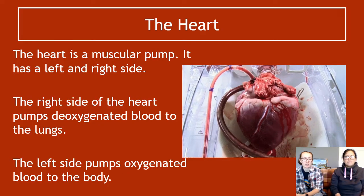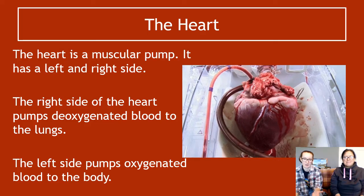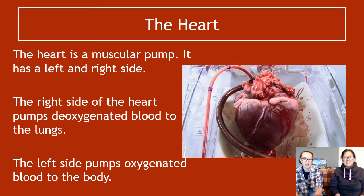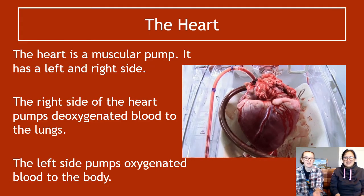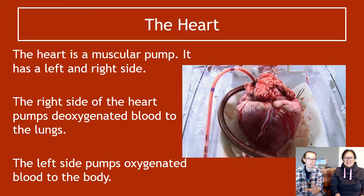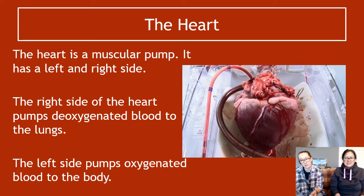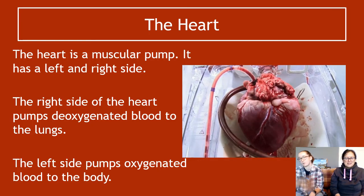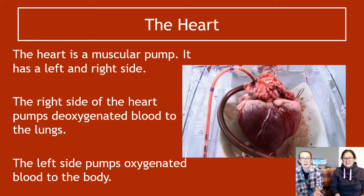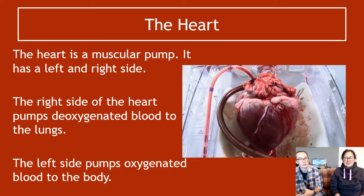The heart is a large muscular pump that circulates blood around the body. It has a left side and a right side responsible for different types of blood. The right side pumps deoxygenated blood to the lungs so they can oxygenate it. The left side pumps newly oxygenated blood out to the body, where it travels around and comes back.